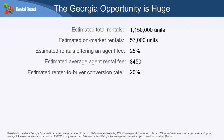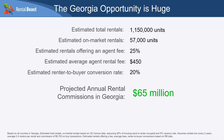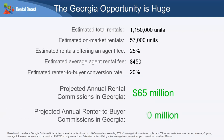The Georgia opportunity for commission is massive. We estimate about 1.1 million rental units statewide. Based on a five percent vacancy rate, around 57,000 units are active at any point. We estimate about 25% of rentals offer some sort of agent commission — including many off-MLS rentals. The average agent rental commission is around $450. Combined, the projected annual rental commissions in Georgia are $65 million. Adding renter-to-buyer conversions — roughly one in five — the total is almost half a billion dollars coming from rentals.